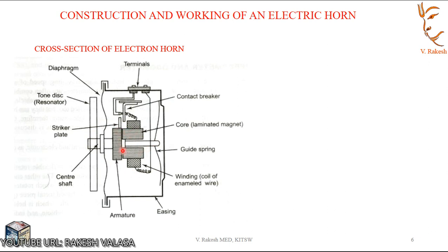The flexible diaphragm will vibrate — that means oscillate back and forth — continuously as long as current is applied, producing the desired sound. The electromagnet is provided in the center of the horn casing, with a core laminated magnet. The armature is attached to the center shaft; one end of the shaft is attached to the diaphragm and the other end is attached to the guide spring. At the diaphragm end, the shaft extends further, and near its outer end a toned disc — also called a resonator, sometimes known as a second diaphragm — is fitted.